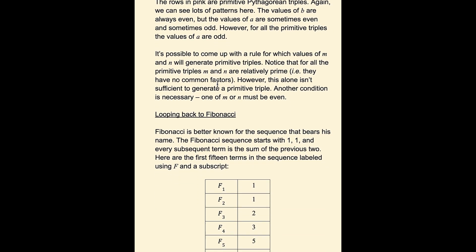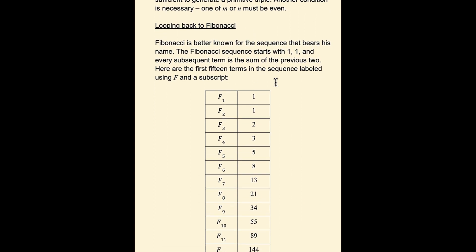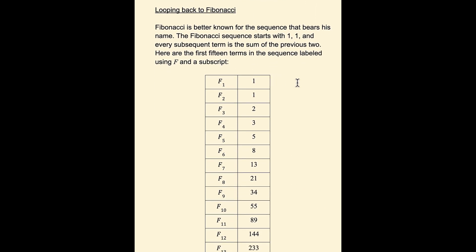Looping back to Fibonacci. Fibonacci is better known for the sequence that bears his name. The Fibonacci sequence starts with 1, 1, and every subsequent term is the sum of the previous 2.